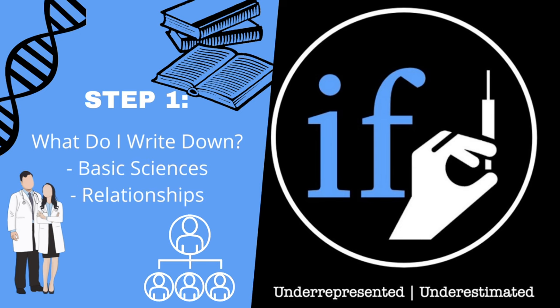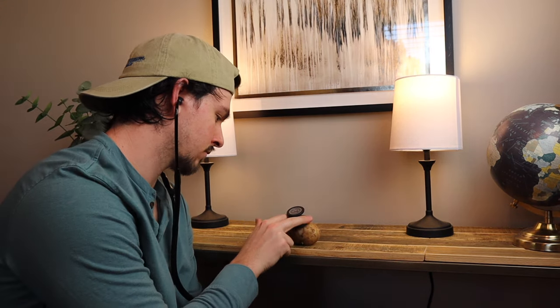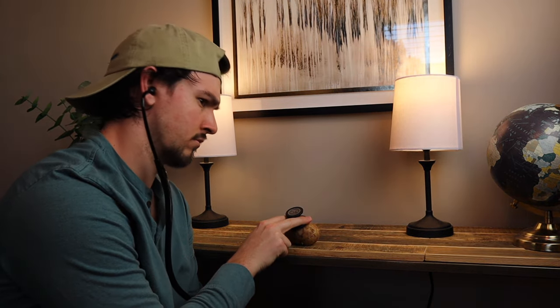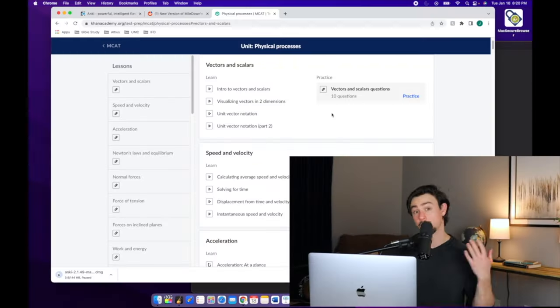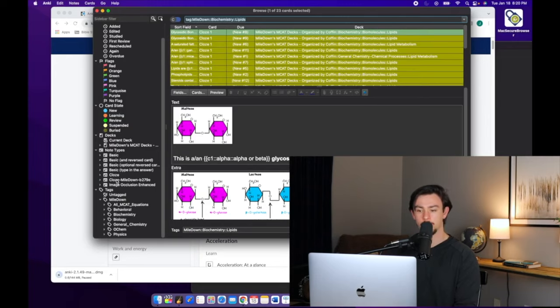Step one: you have to understand what classifies as a basic science and a relationship. A basic science is what you're actually getting tested on when it comes to the MCAT. It's going to be any science that you remember from your big keystone courses in undergraduate, like your biochem, or anything that you remember from a test prep book. If you're curious about how to learn and identify those, make sure to check out our video on how to use Anki and Khan Academy to learn those basic sciences for free.